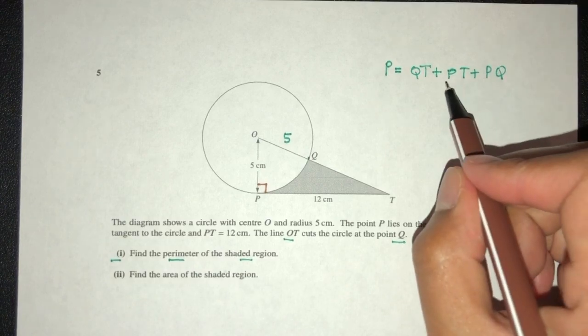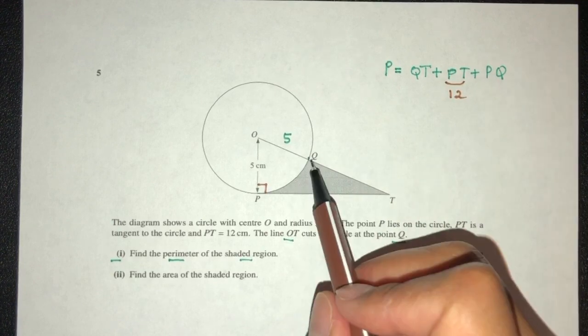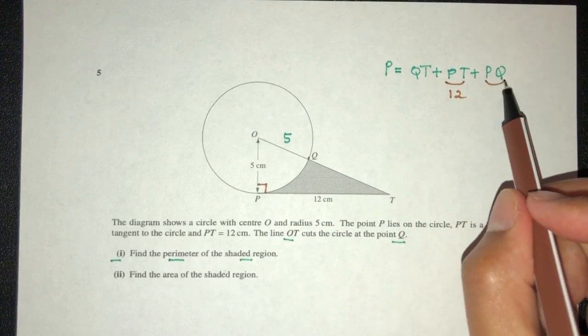So we know the value of PT already. It is 12. Of QT, we don't know yet. Of PQ, we don't know yet. Now PQ is pretty easy. It is what? How can you find this length?